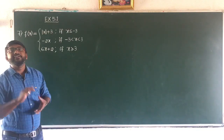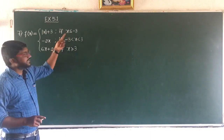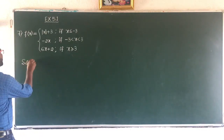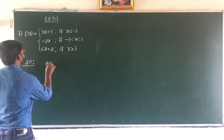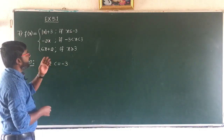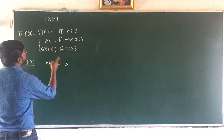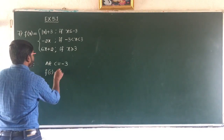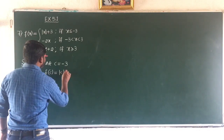We have to check the continuity at c equal to minus 3 and c equal to plus 3. So I will be taking only these two cases. At c equal to minus 3, we will have to go for LHL, RHL, and the value of the function. The value is mod(c+3).